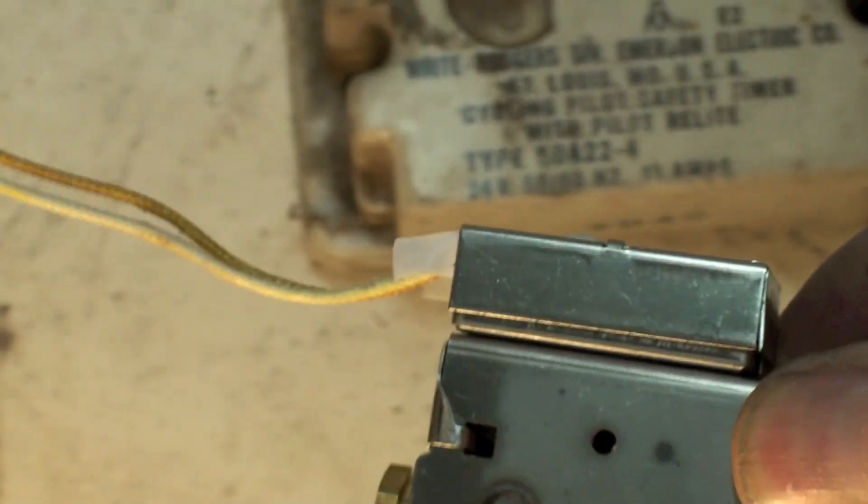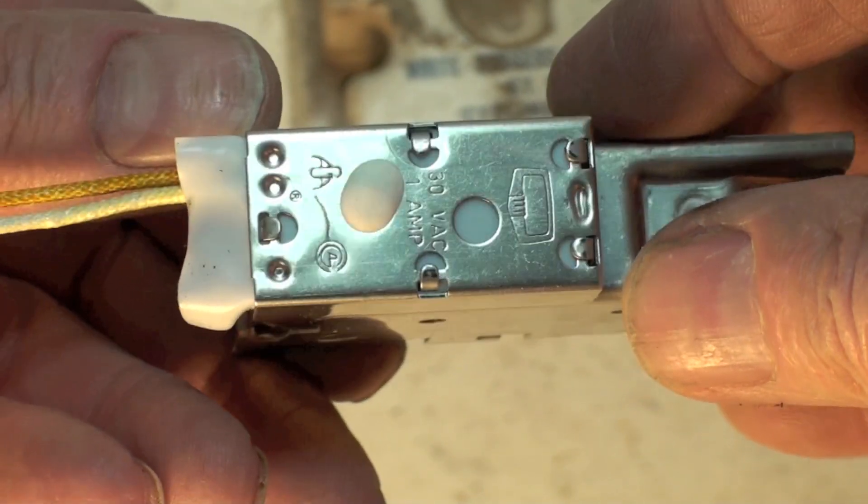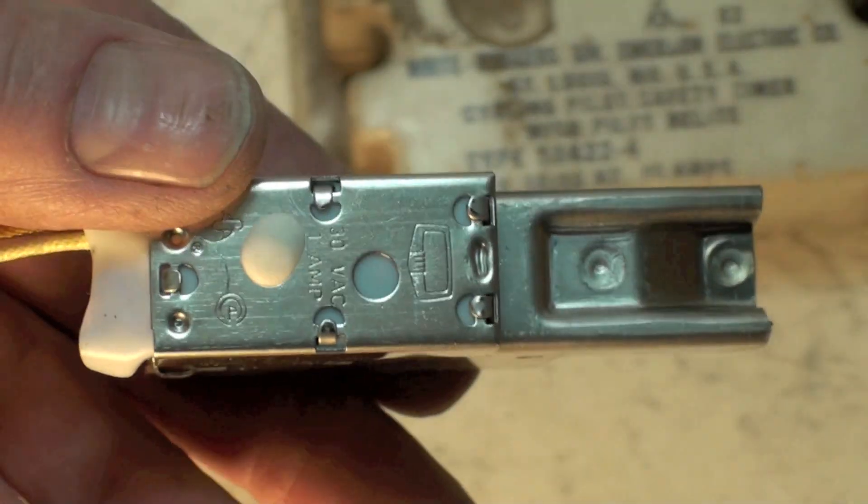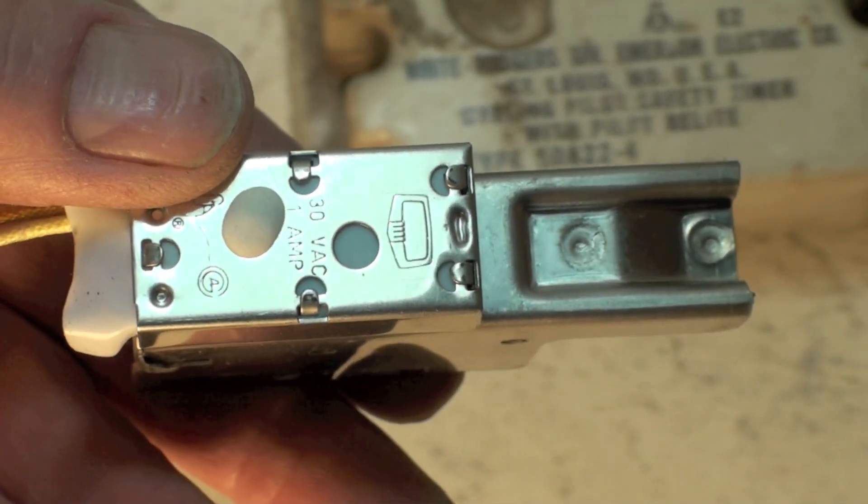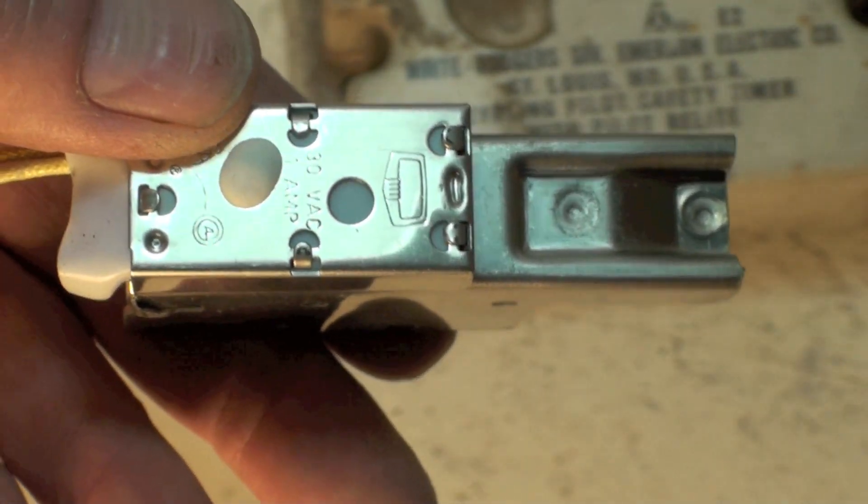This switch here where these wires are is a normally open switch. If there's no pilot then this thing is open. When the pilot's on it closes and allows main gas to come on.